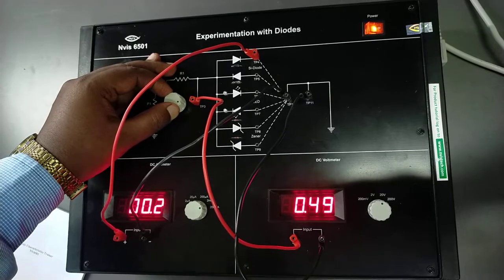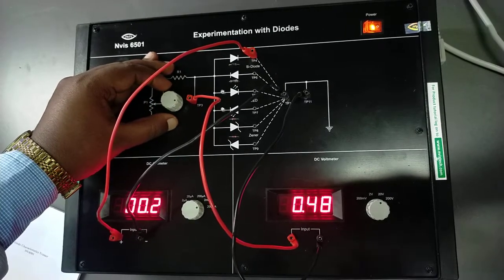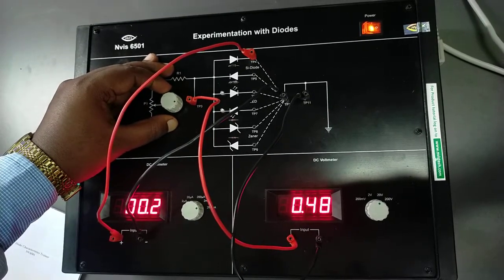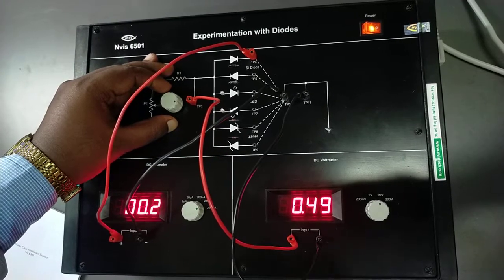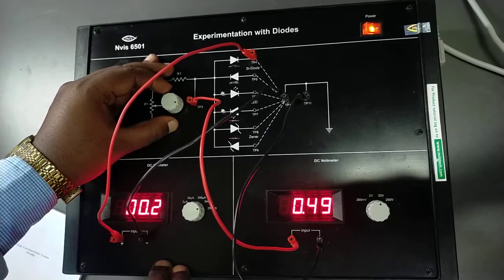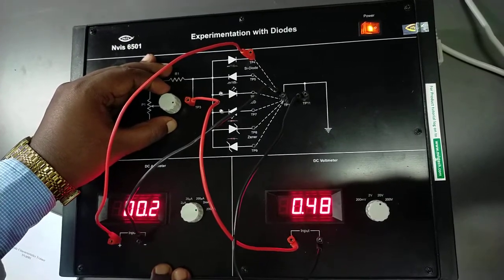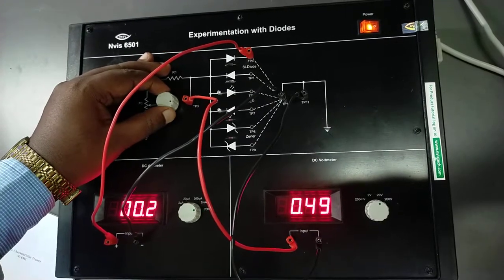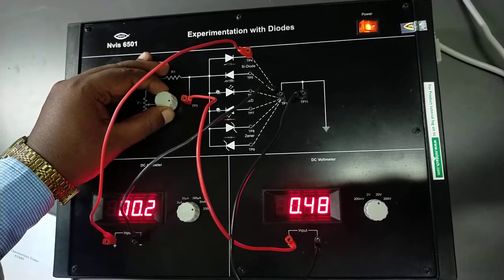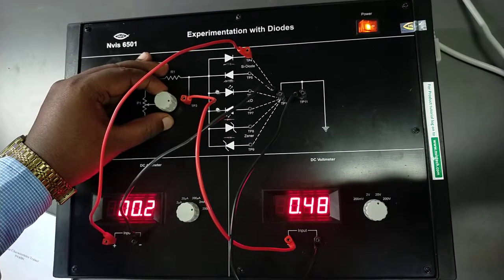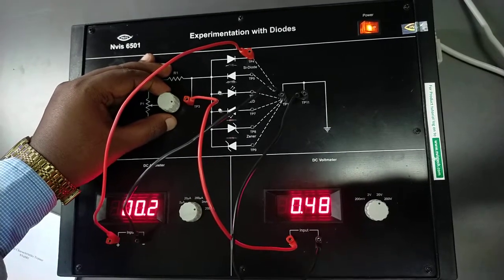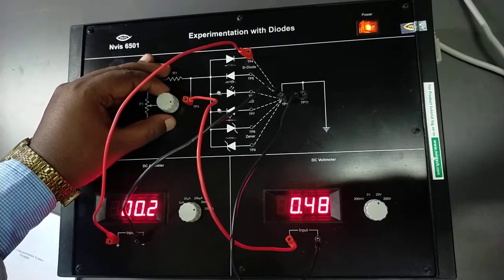In this way, we have to increase the voltage and note the readings of the ammeter, and then we will plot the curve between the voltage and the current.